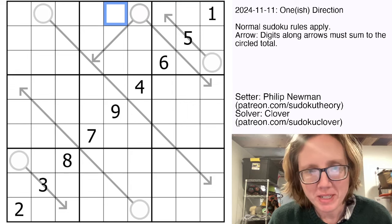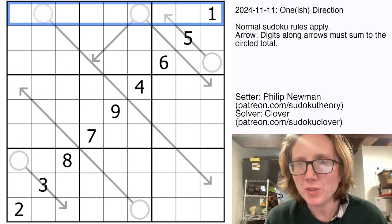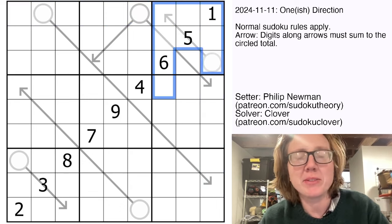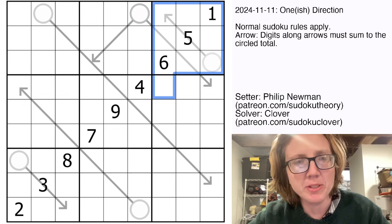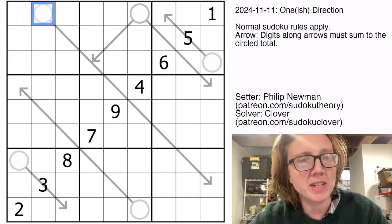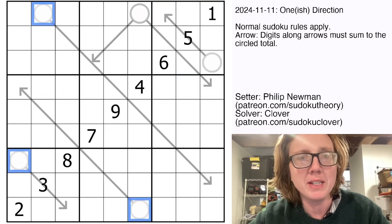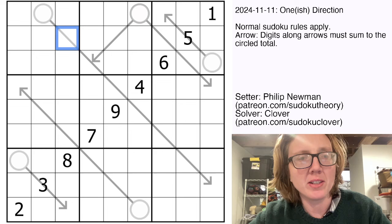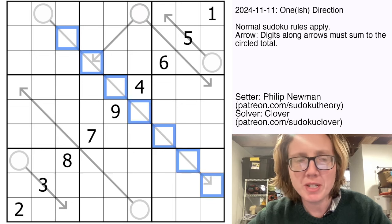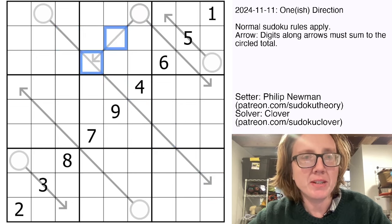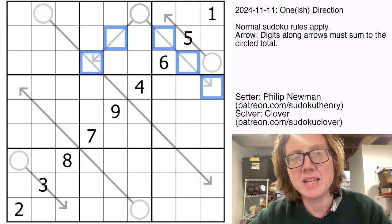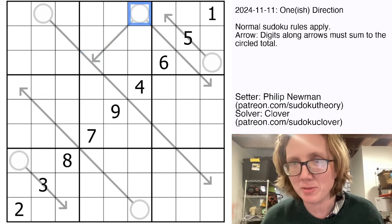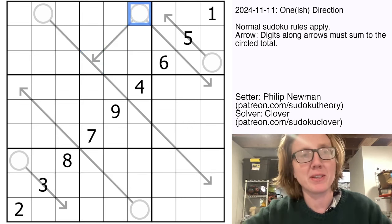Normal sudoku rules apply. We're placing the digits one through nine once each in each row, each column, and each heavily outlined three by three region. And then we also have some arrows in the grid, and along each of these arrows, we've got a round bulb, and the bulb contains the sum of the digits along the arrow. There's one arrow here that has two different arrows attached to one bulb, and in this case, these each sum to the value in the bulb independently. That's the rule with arrow sudoku, unless specified otherwise.